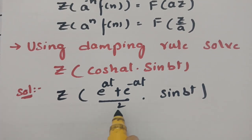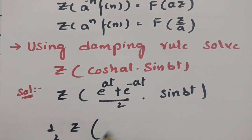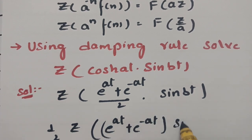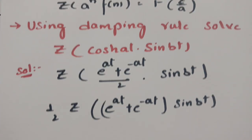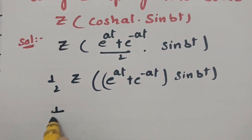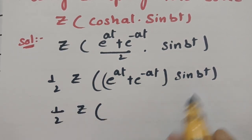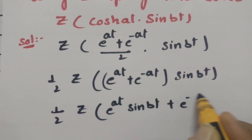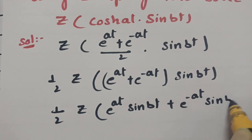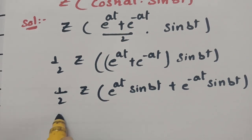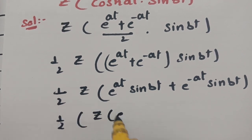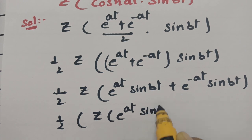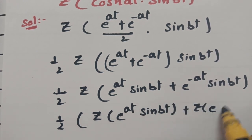Now I am bringing the half common, so this is e power at plus e power minus at into sin(bt). The next step is half times of Z of: if I multiply these two, this will be e power at into sin(bt) plus e power minus at into sin(bt). Using Z transforms, this is half times of Z of e power at into sin(bt) plus Z transform of e power minus at into sin(bt).